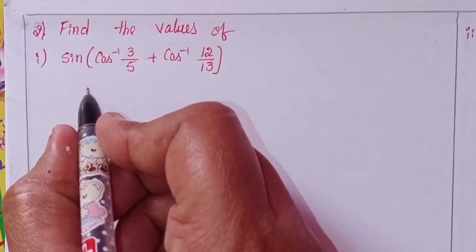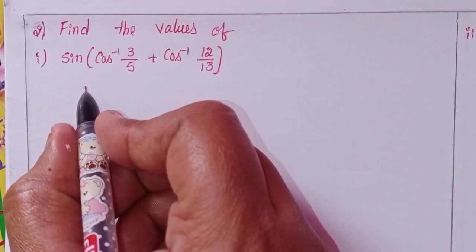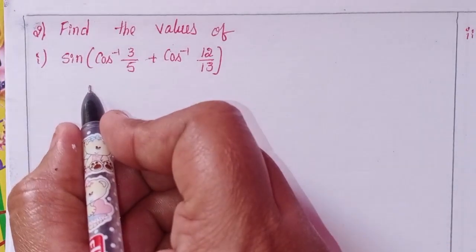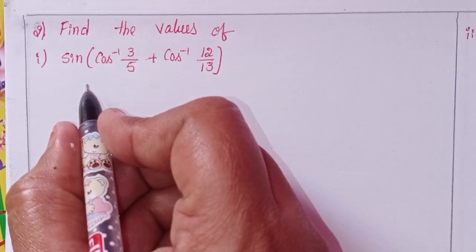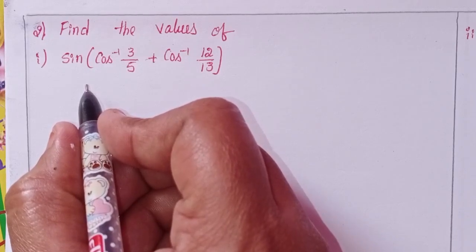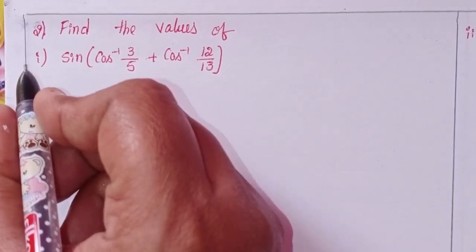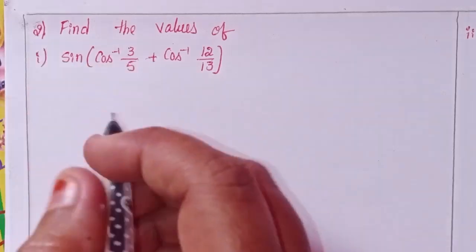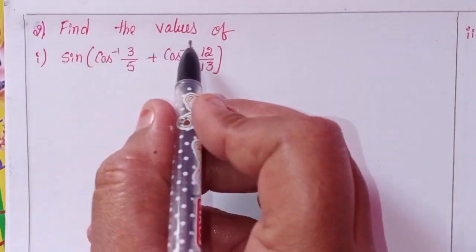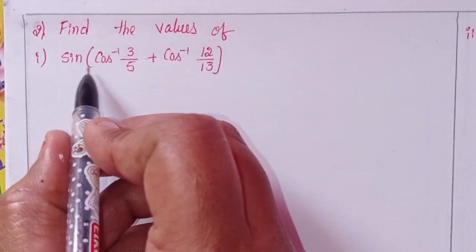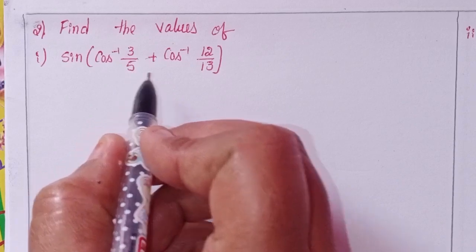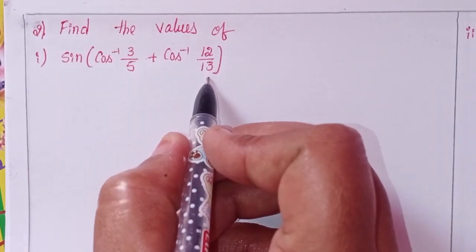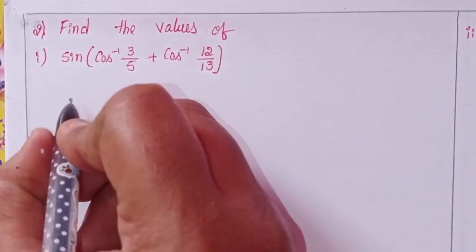Hi viewers, this is Shahin and welcome to my channel. Today we will discuss Intermediate First Year, Chapter 8: Inverse Trigonometric Functions, Exercise 8a, second problem — find the values. First one: sine of cos inverse 3 by 5 plus cos inverse 12 by 13.